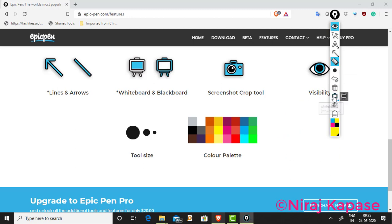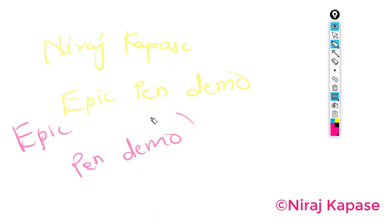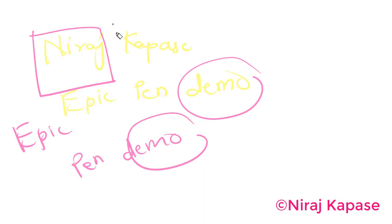Another feature is the whiteboard and blackboard. I will select paint and click on whiteboard — this board is available and I can write anything on it. I can change the color immediately, draw circles, and highlight particular things over the drawing.